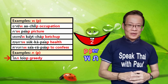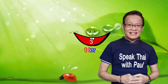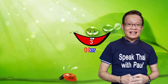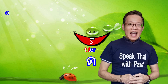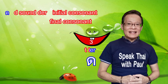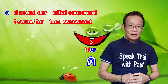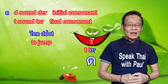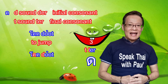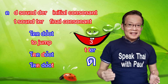Three: the T sound. There are 16 consonants that can produce this stop final sound. The most commonly used consonant is 'dor dek.' Dor dek is the D sound when used as an initial consonant. However, as a final consonant, it produces the T sound. Dor dek is used both as an initial consonant with a D sound and as a final consonant producing the T sound.